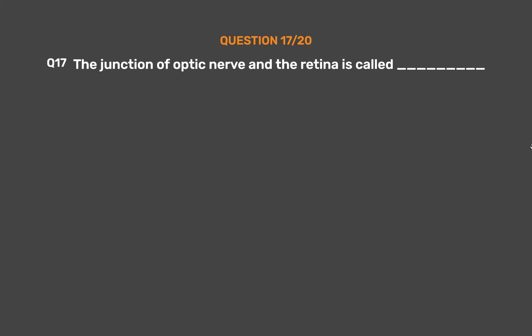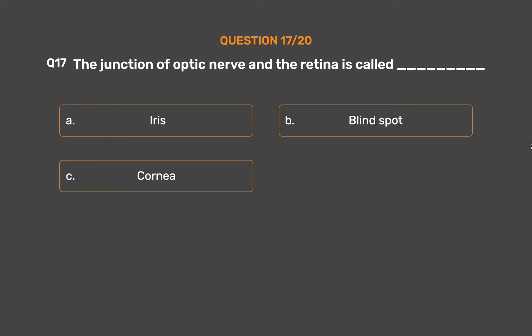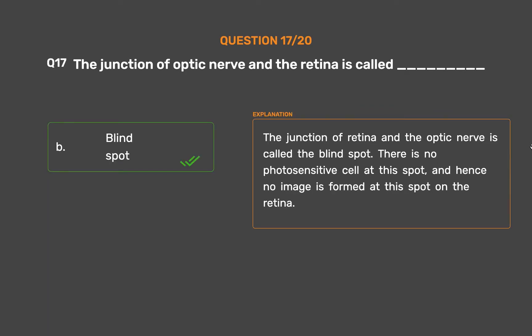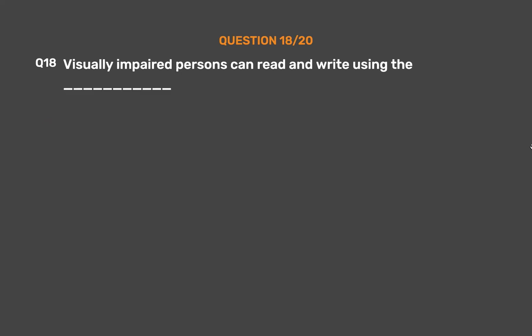Question number 17: The junction of the optic nerve and the retina is called — Option A: Iris. Option B: Blind spot. Option C: Cornea. Option D: None of these. The correct answer is Option B, Blind spot. The junction of the retina and the optic nerve is called the blind spot. There are no photosensitive cells at this spot, and hence no image is formed at this spot on the retina.